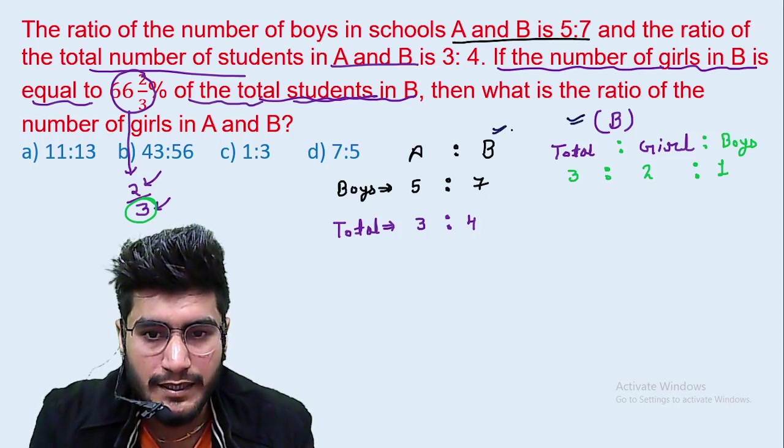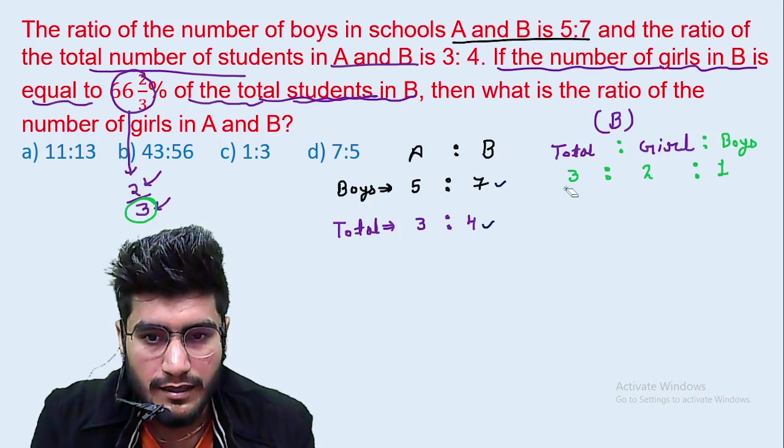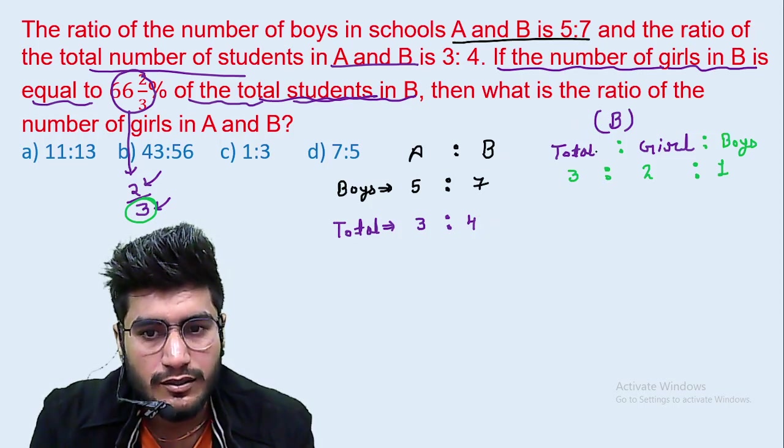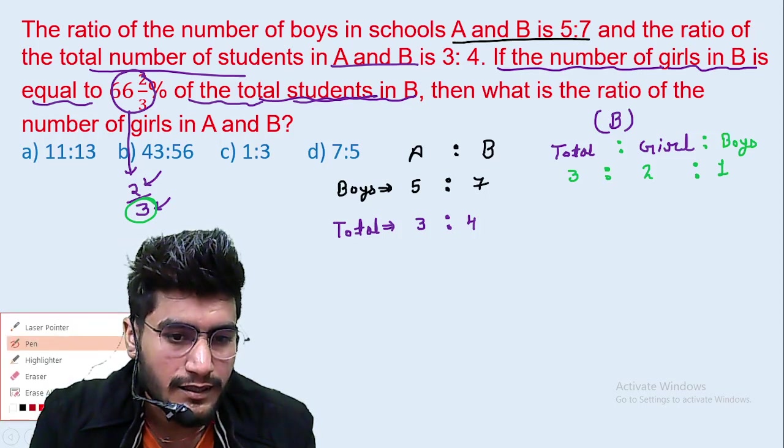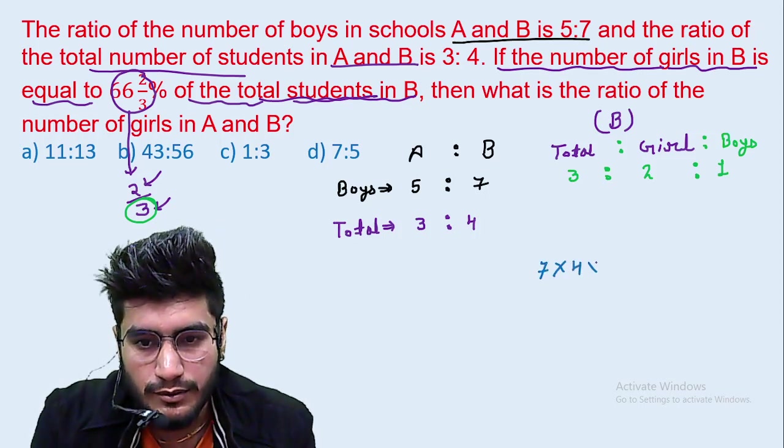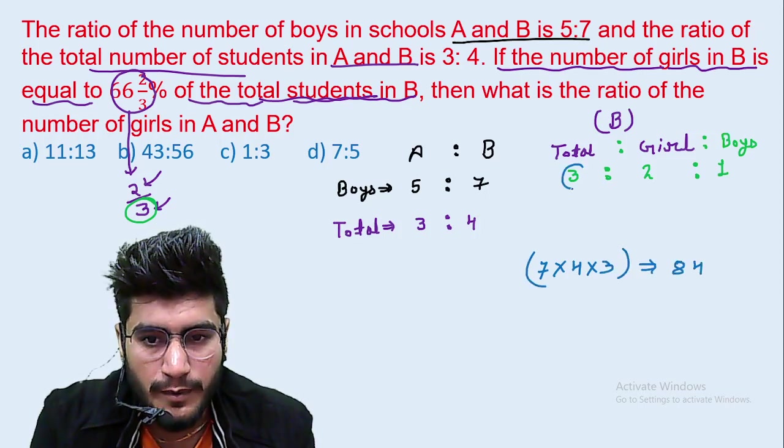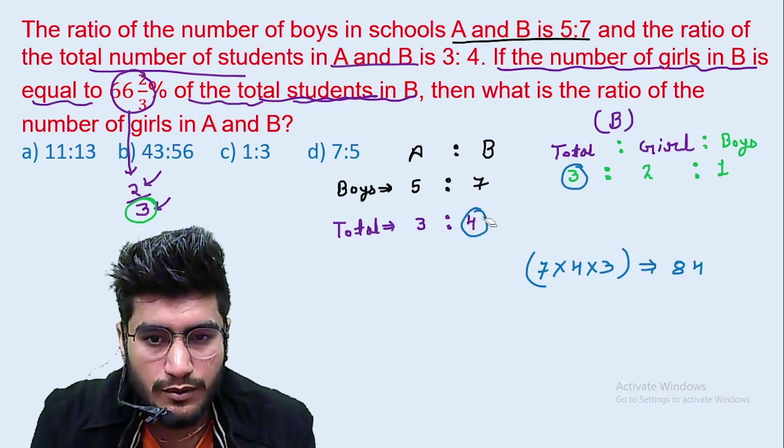Here we have B. What is B? Here is 7, here is 4, here is 3. 7, 4, 3, then we have to make a common base. 7 into 4 into 3, we have to make a common base. So total we have to make 84. Total we make 84.